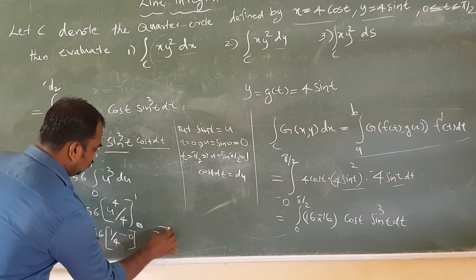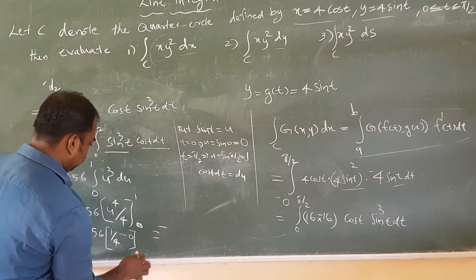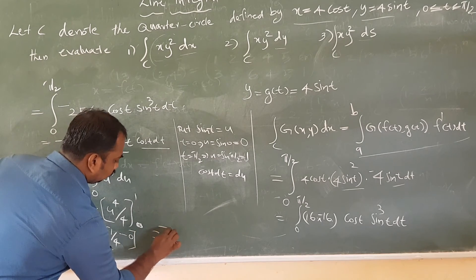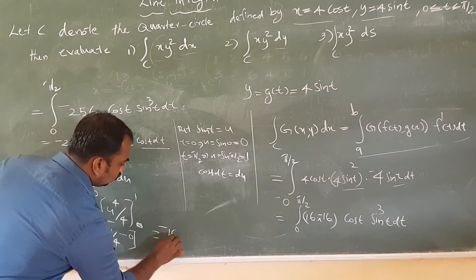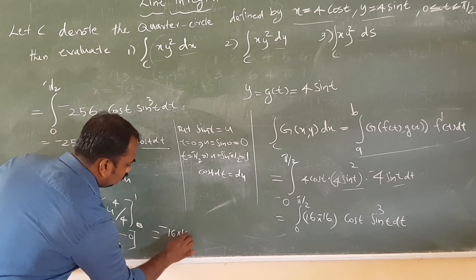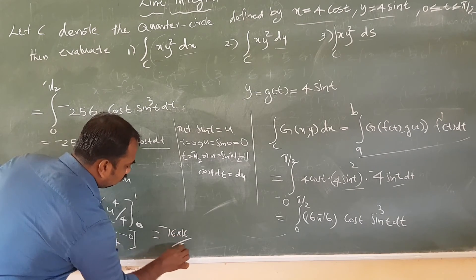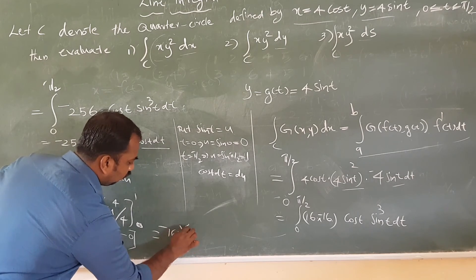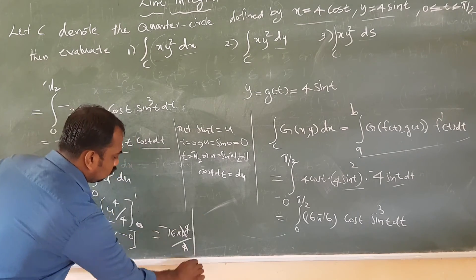So we get minus 256 times (1 raised to 4 minus 0), which gives minus 256 times 1/4. That equals minus 64.